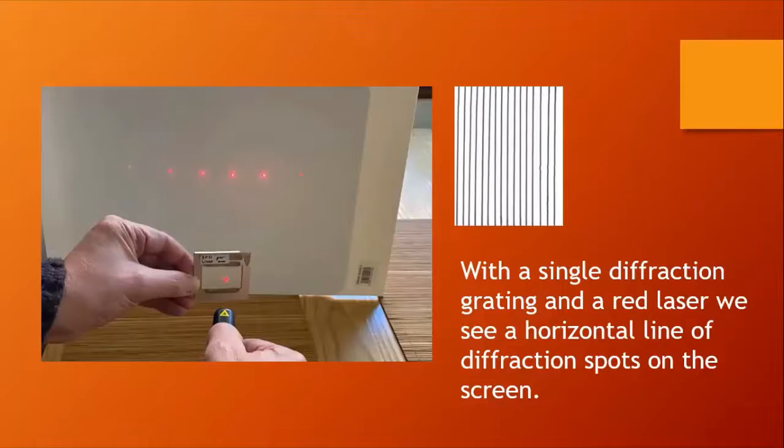Now here I am shining a red laser at a diffraction grating which has vertical slits. We see a horizontal line of diffraction spots on the screen. The central one appears to be, although it's a bit difficult to see here, the central one appears to be a little bit brighter. You can then turn the diffraction grating through 90 degrees and the line of spots would be vertical.